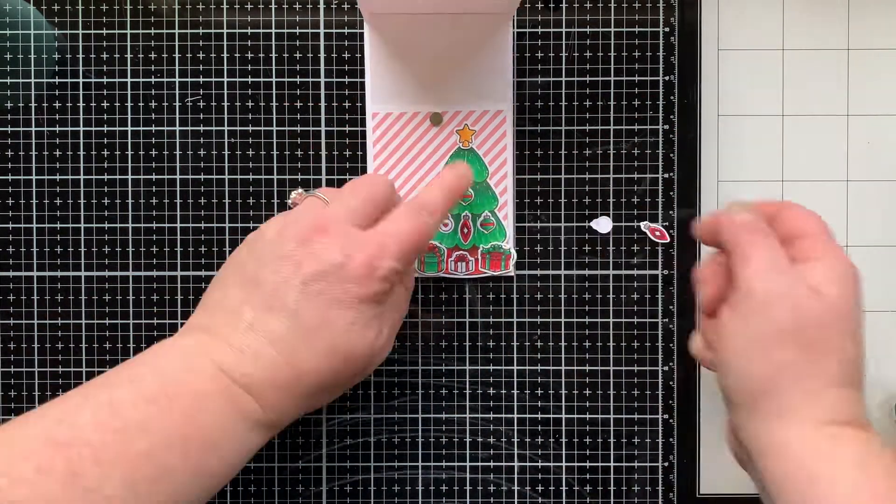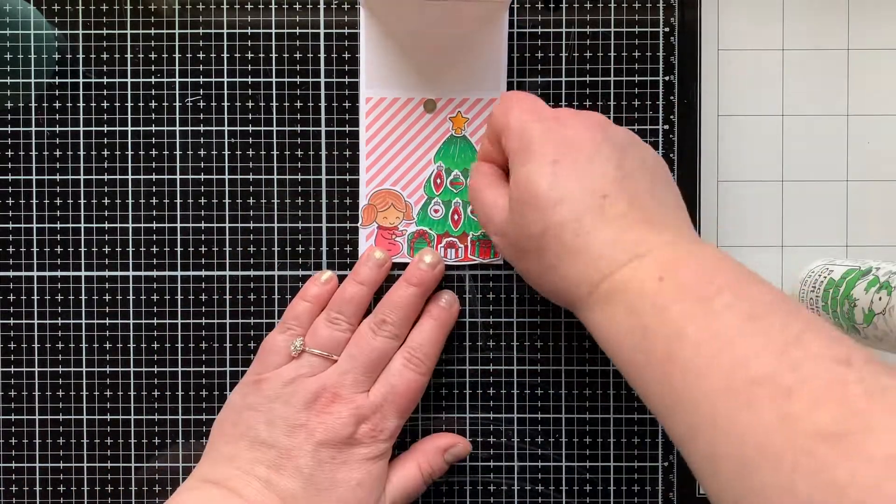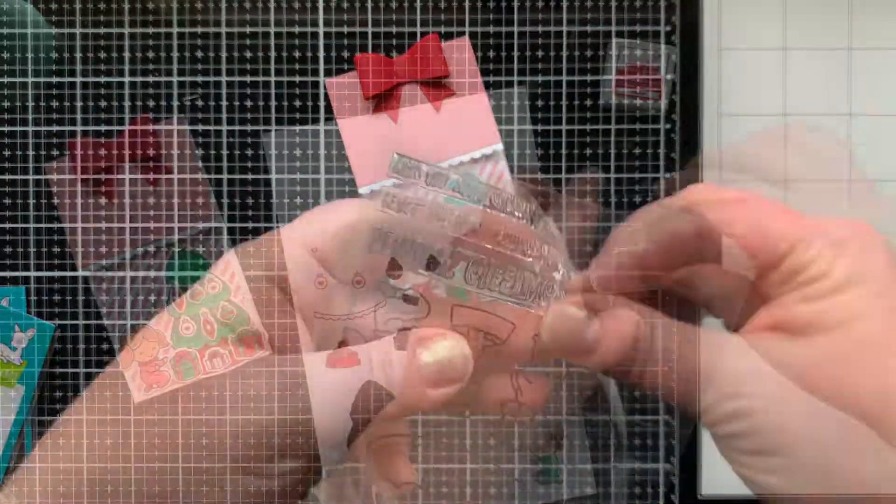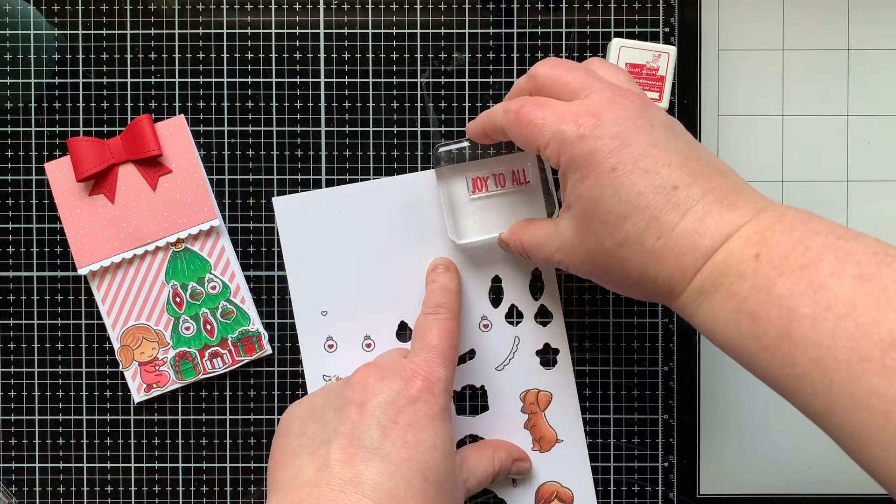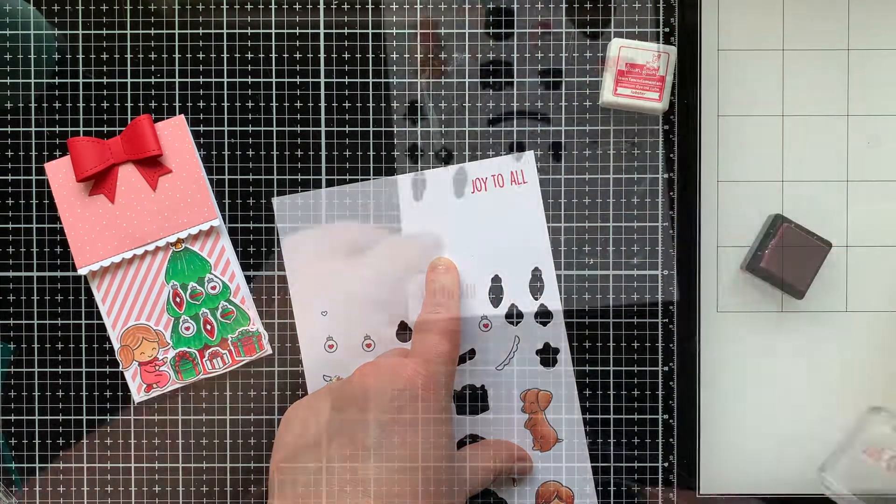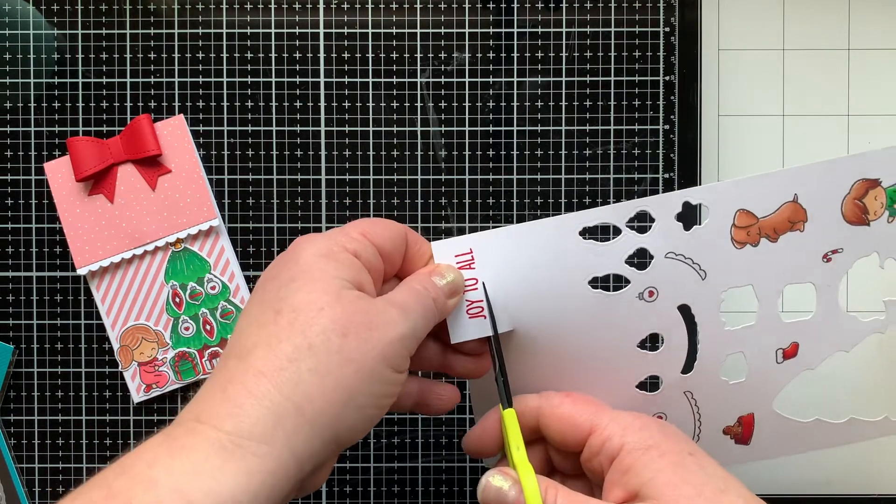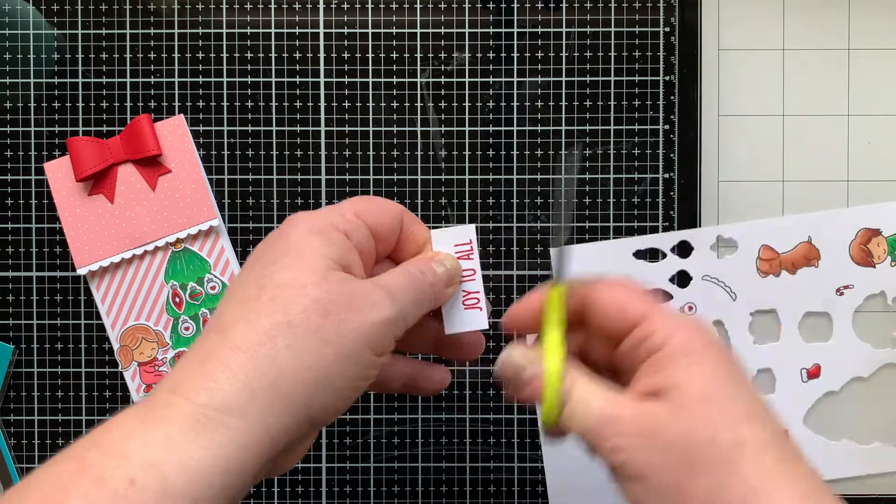So I'm just decorating this tree with the little ornaments that come in the stamp set. There's also garland you could add to this tree. I think it's so, so cute. I'm going to stamp Joy to All from this set in some Lobster ink, and then I'm just going to use my scissors to cut this out. I don't find any stress in doing this, but if you do you can totally use a banner die to do this.